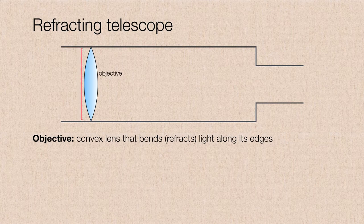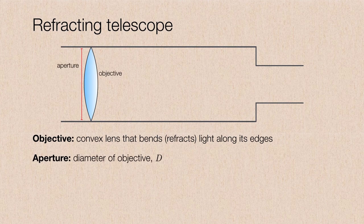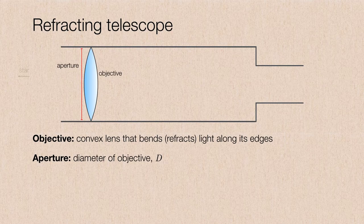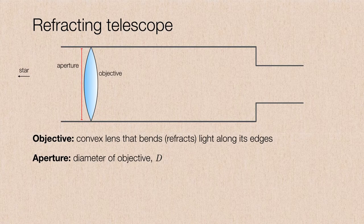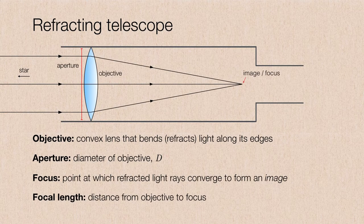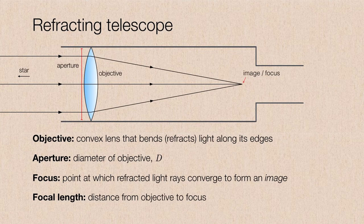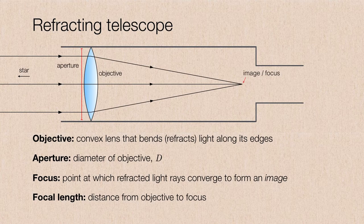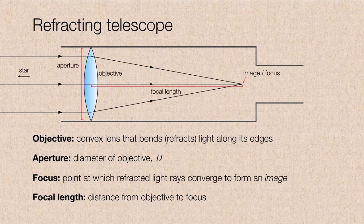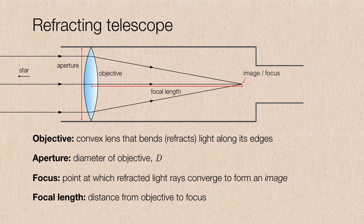The diameter of the objective is referred to as the aperture. We usually symbolize that with the uppercase letter D. And if we had a distant star, then all of the star's light would be coming through the lens initially in parallel. However, because the light refracts more at the edges, they will eventually converge to form an image. And the point at which it forms the image is called the focus. Therefore, the distance from the objective to the focus is called the focal length.